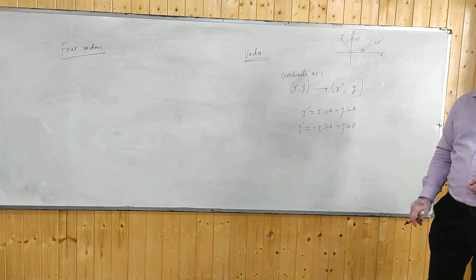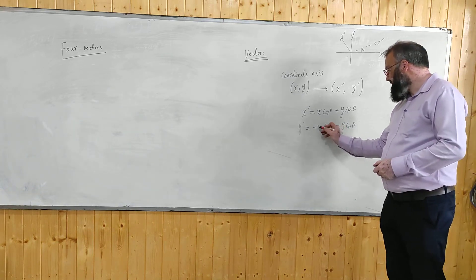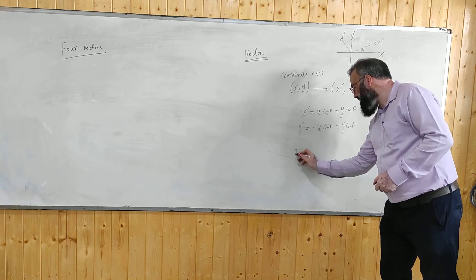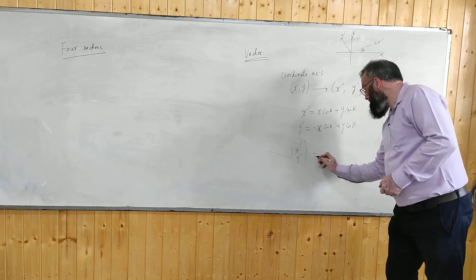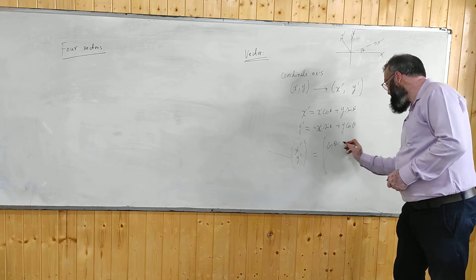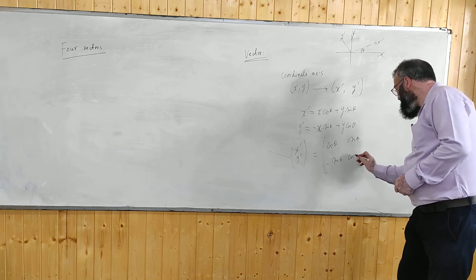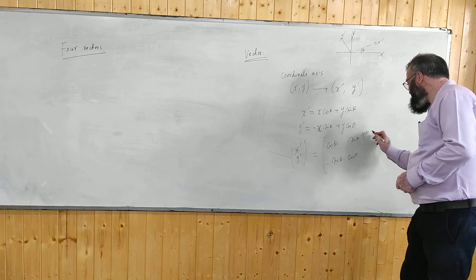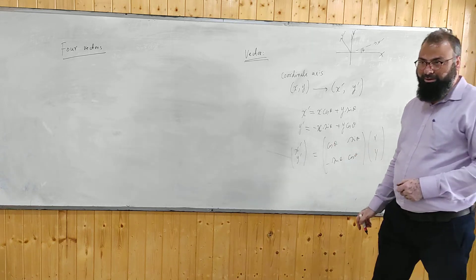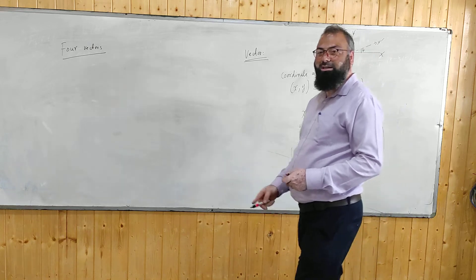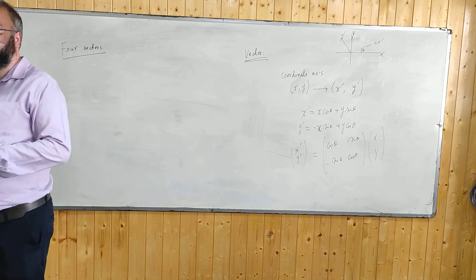What is the determinant here? Let us write x prime, y prime as a matrix: cosine theta, sine theta, minus sine theta, cosine theta, times x, y. The determinant is cosine squared theta plus sine squared theta, which equals one. It is an orthogonal transformation.